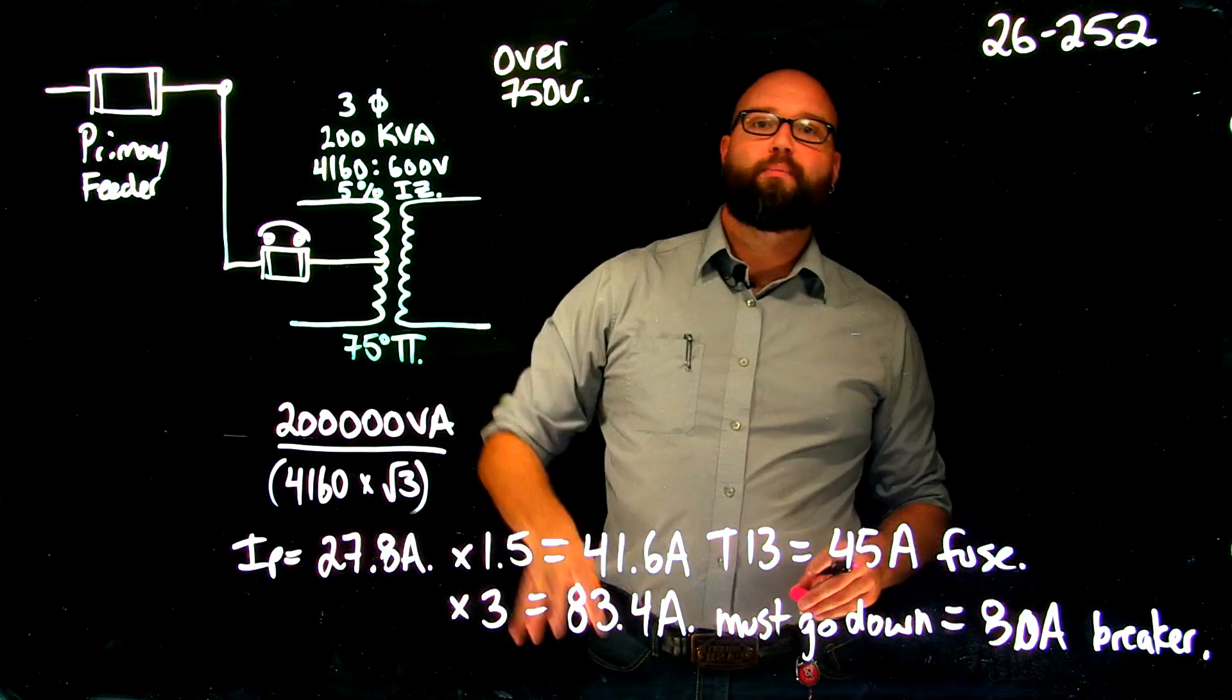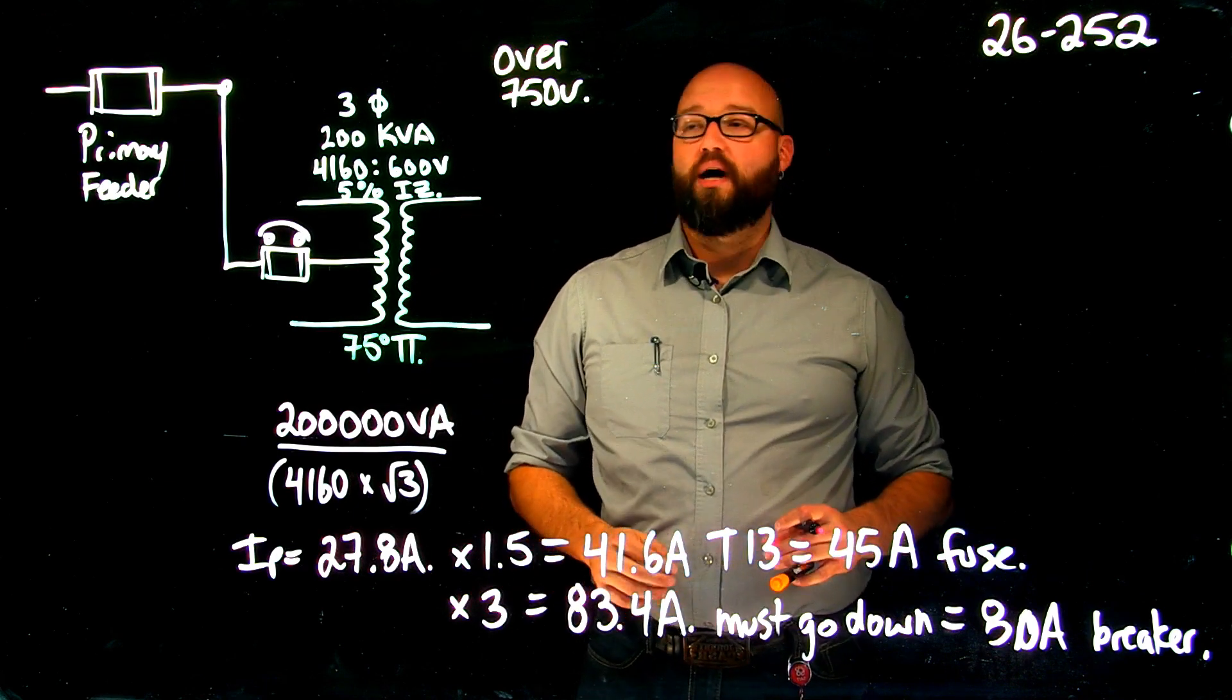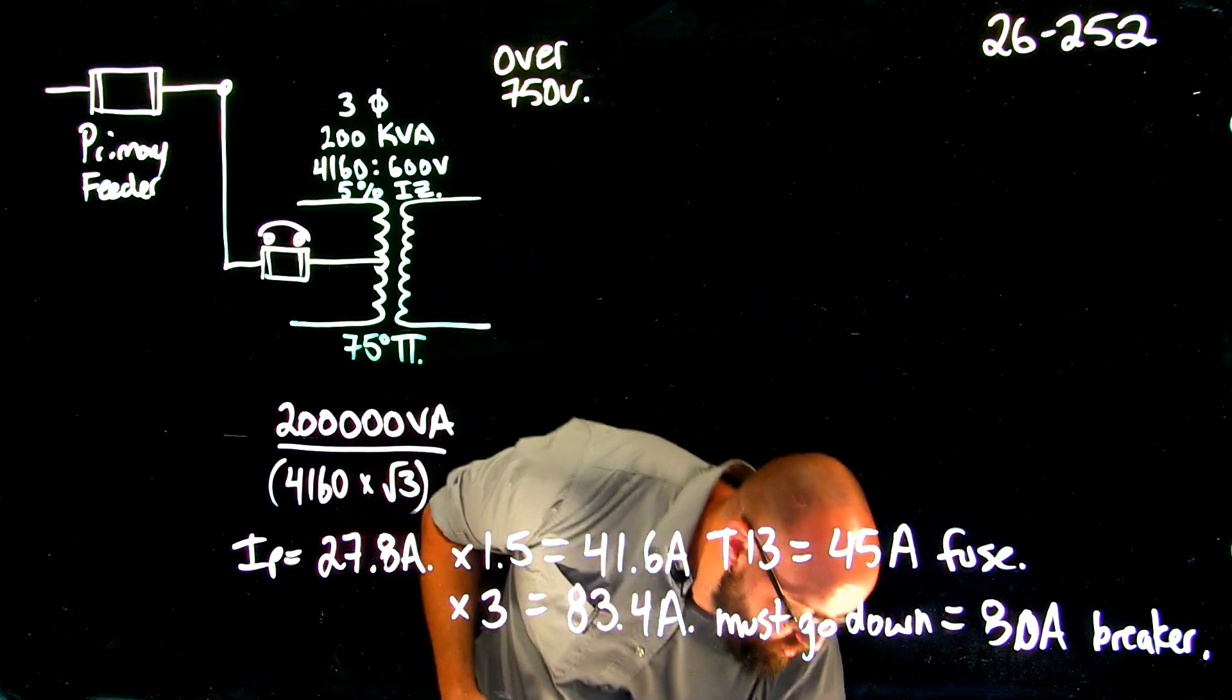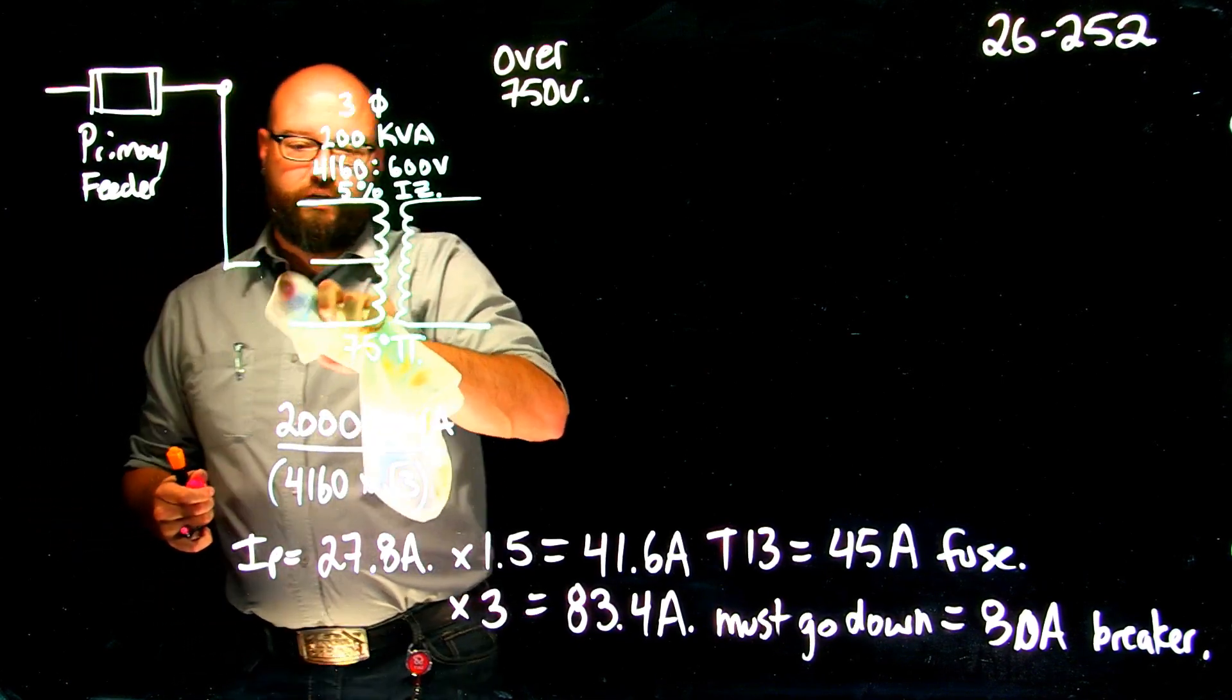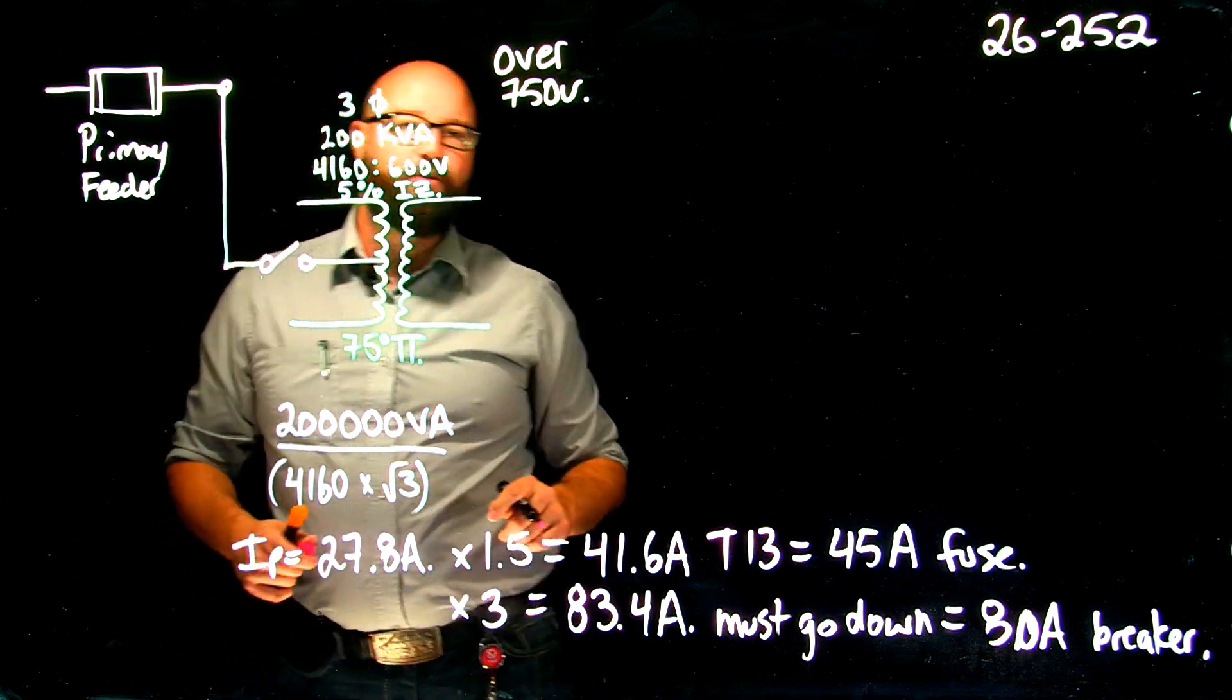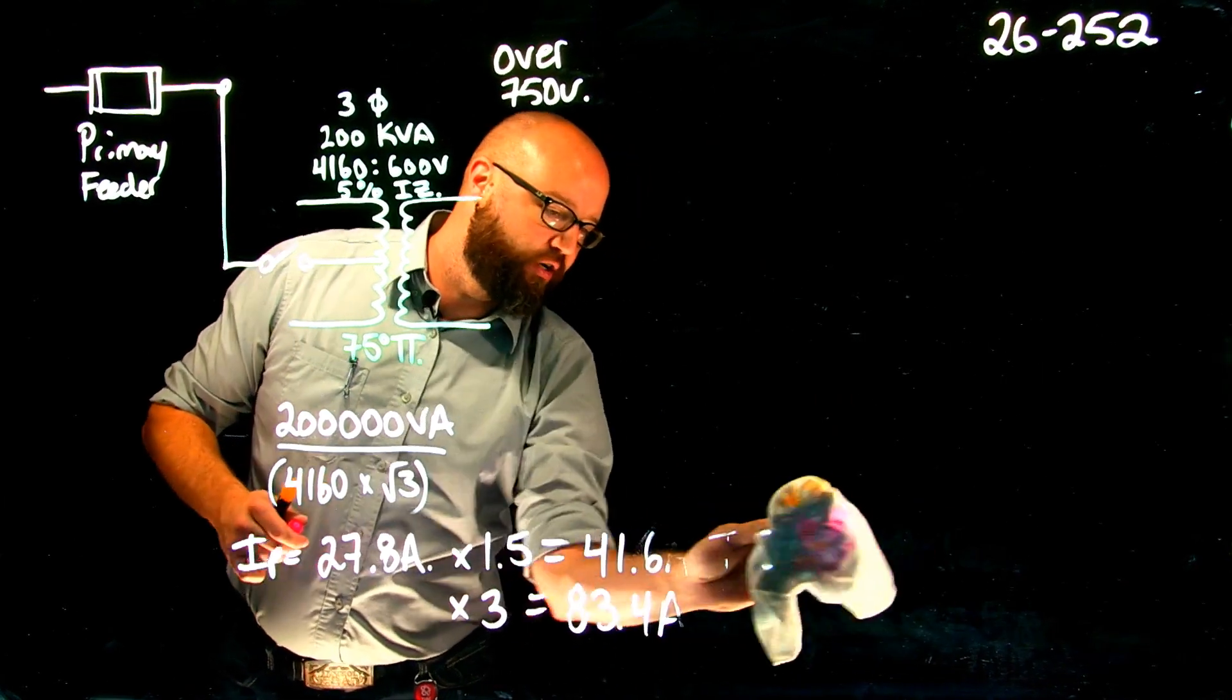This is only primary protection. There is no secondary protection. It tells me that if I have a load fed off the secondary, my primary protection will adequately protect the secondary of my transformer. We don't need to worry about the primary feeder because that would be sized independently in this case. What we're going to worry about next though, is what happens if we want to omit this primary protection. We're allowed to do that, but under very special conditions. If I wanted to get rid of this primary protection, I still have to have some type of disconnecting means. Maybe we have an unfused disconnect in there that still disconnects my transformer.